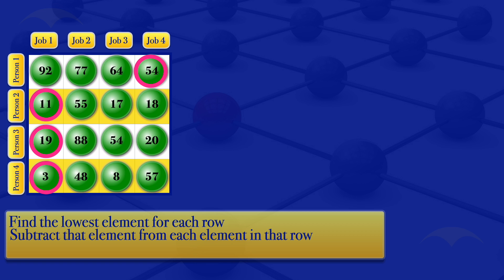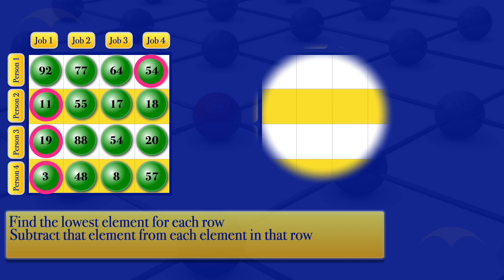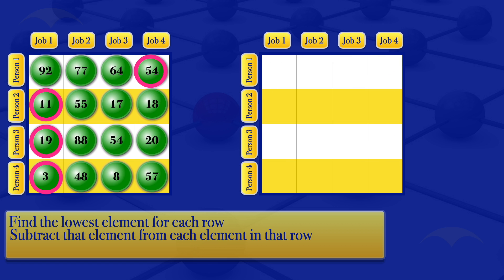We subtract the circled elements from each element in that row. Drawing another table with the jobs and people, for row number one we subtract 54: 92 minus 54 gives 38, 77 minus 54 gives 23, 64 minus 54 gives 10, and 54 minus 54 gives 0.